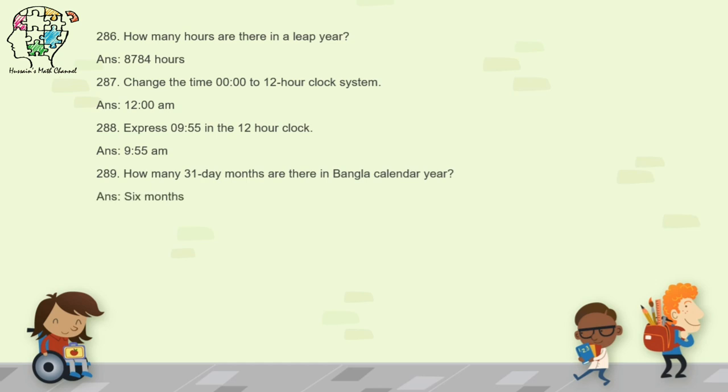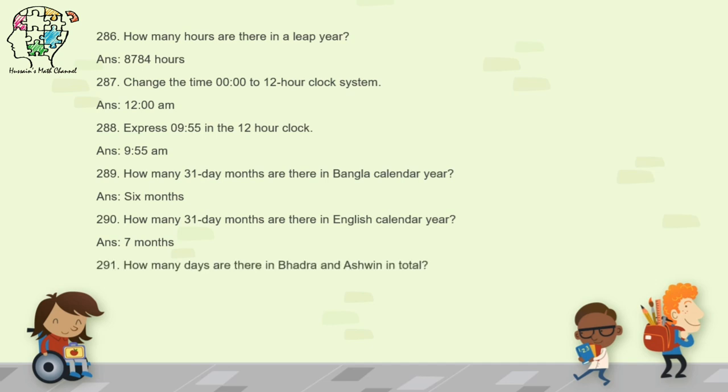Question 290: how many 31-day months are there in the English calendar? There are 7 months of 31 days in the English calendar. Question 291: how many days are there in Bhadra and Ashin in total? According to the new Bangla calendar, there are 62 days in total.